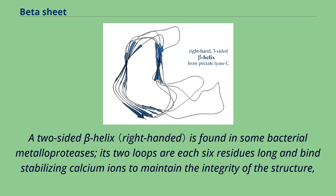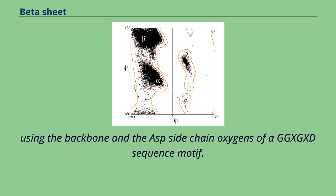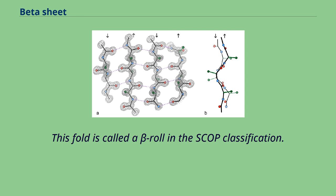A two-sided beta helix is found in some bacterial metalloproteases. Its two loops are each six residues long and bind stabilizing calcium ions to maintain the integrity of the structure using the backbone and the aspartate side chain oxygens of a GGXGXD sequence motif. This fold is called a beta roll in the SCOP classification.